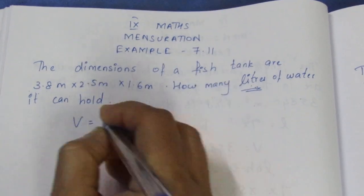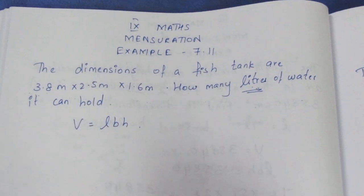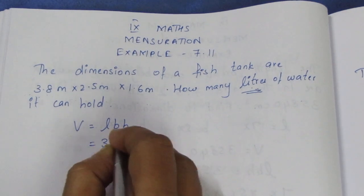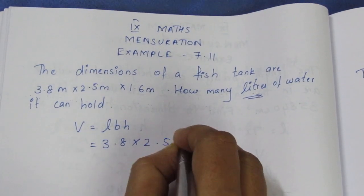So the volume is length times breadth times height. If you put it, it is 3.8 times 2.5 times 1.6.